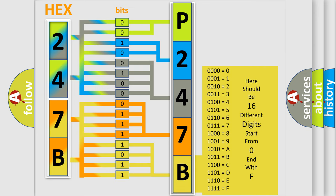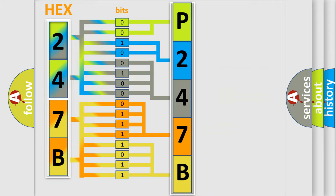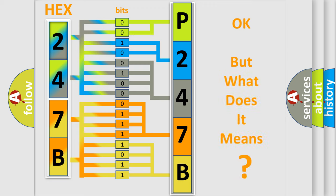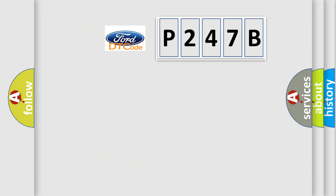We now know how the diagnostic tool translates received information into a more comprehensible format. The number itself does not make sense to us if we cannot assign meaning to what it actually expresses. So, what does the diagnostic trouble code P247B interpret specifically for Infiniti car manufacturers?